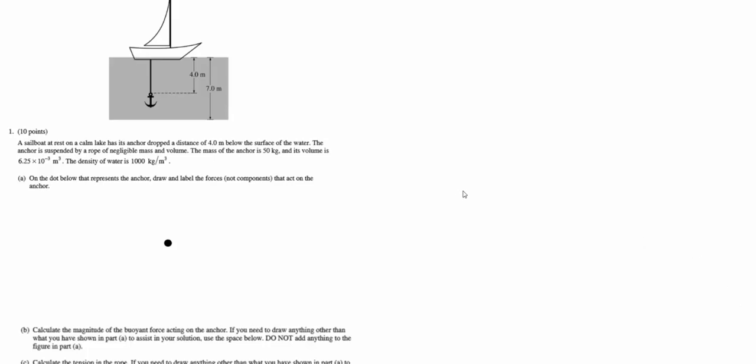This is number 1 from the 2013 AP Physics B exam, a fluid physics problem worth 10 points. Keep that in mind when practicing for the AP Physics 1 and 2 exams. We've got a sailboat with an anchor in the water. The anchor is dropped 4 meters below the surface, suspended by a rope with negligible mass and volume. The mass of the anchor is 50 kilograms, its volume is given, and the density of the water is given.